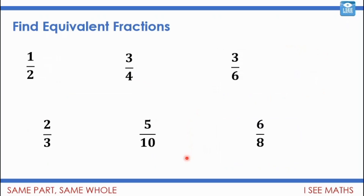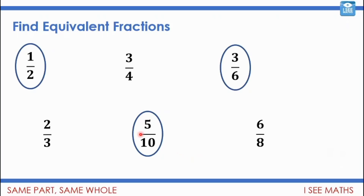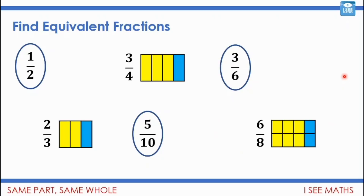Have a look at these fractions and see if you can find any equivalent ones. The ones that are a half: we've got a half, five-tenths — five is half of ten — and three-sixths — three is half of six. Looking at the fractions that are left with pictures to help: three-quarters and six-eighths are the same. I've put a line in here to cut the same part in the same whole into more pieces — still four columns, three of them yellow. Two-thirds is not the same. So three-quarters and six-eighths are the equivalent ones.